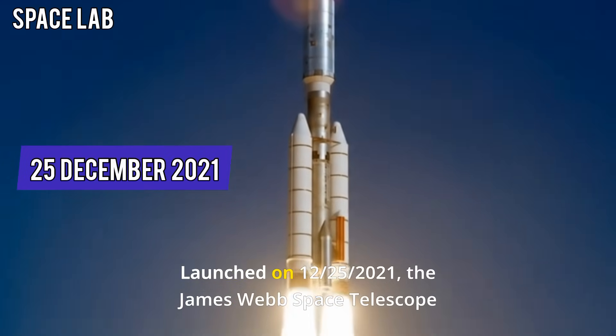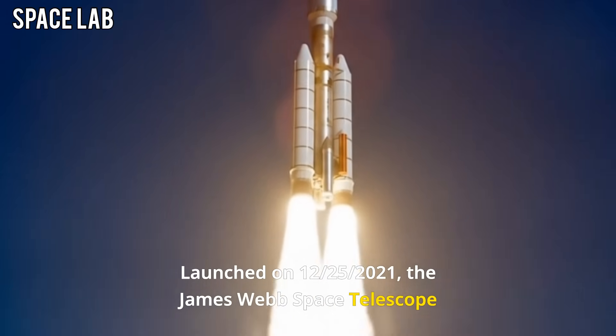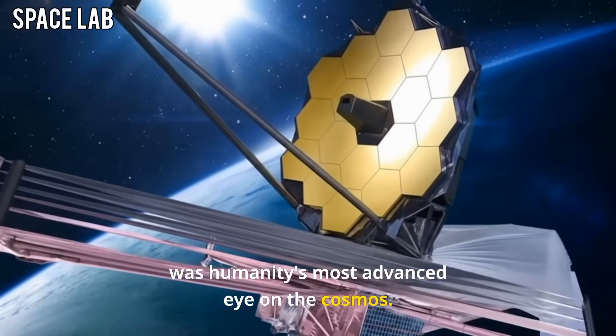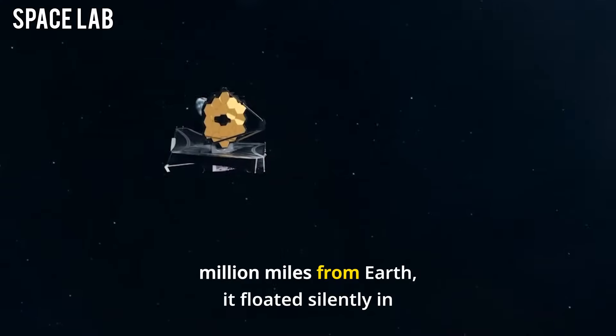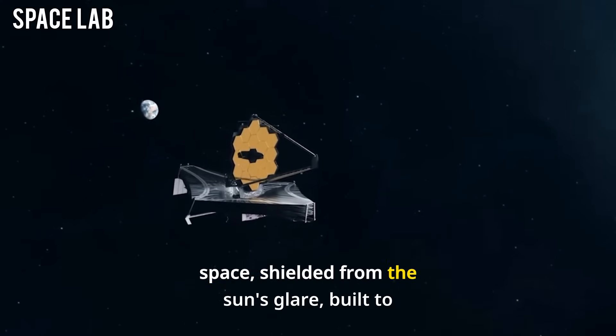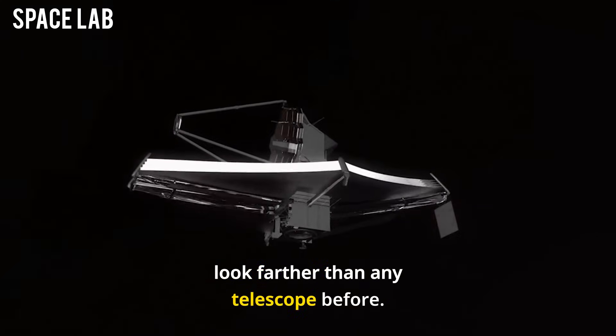Launched on December 25th, 2021, the James Webb Space Telescope was humanity's most advanced eye on the cosmos. Positioned at the L2 Lagrange Point, a million miles from Earth, it floated silently in space, shielded from the sun's glare, built to look farther than any telescope before.